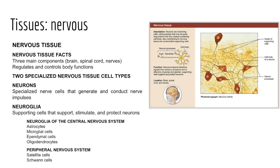In the central nervous system, there are four glial cell types. Astrocytes support and brace neurons, helping ensure they receive nutrients and rid themselves of wastes. Microglial cells are responsible for immune function of the CNS. Ependymal cells line the central cavities of the brain and spinal cord and, with the help of cilia, aid movement of cerebrospinal fluid. Oligodendrocytes wrap their processes around nerves, insulating them to ensure rapid transmission of action potentials.